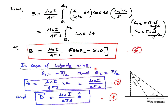For an infinite wire, if the length is very long, then θ₁ = −π/2 and θ₂ = +π/2. Substituting these values gives sin(π/2) − sin(−π/2) = 1 − (−1) = 2. So B = μ₀I/4πs × 2 = μ₀I/2πs. The direction of the magnetic field is in the φ̂ direction, so the magnetic field vector is B = μ₀I/2πs φ̂. This is how we find the magnetic field for an infinite wire using the Biot-Savart law.